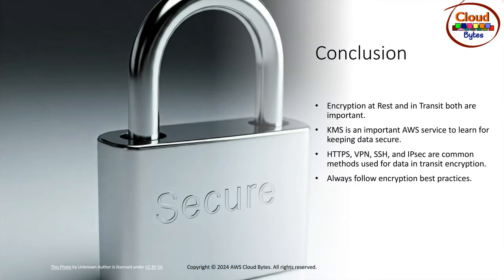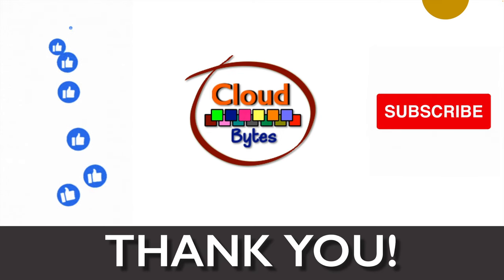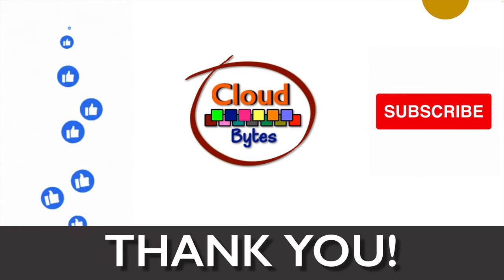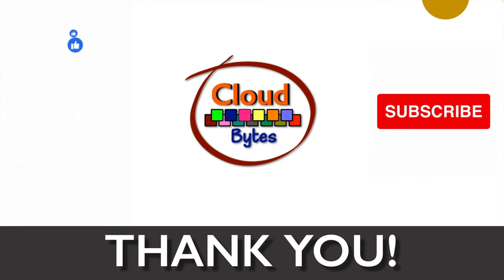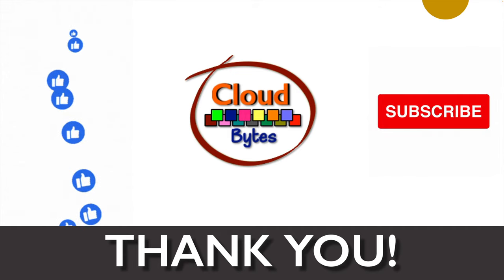In conclusion, encryption at rest and in transit are both important. KMS is a key AWS service to learn for keeping data secure. HTTPS, VPN, SSH, and IPSec are common methods used for data-in-transit encryption. Always follow encryption best practices. Thank you for watching — if you like the video, please like, share, subscribe, and press the notification bell icon for future updates. This is your host Bhavesh Kumar signing off.